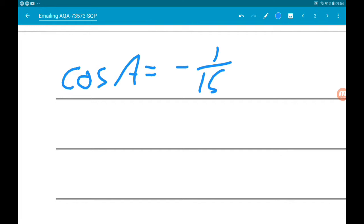So if we square both sides, we get cos squared A is equal to 1 over 225.